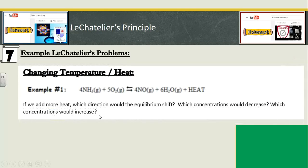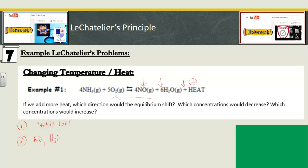For temperature and heat: if we add more heat, we shift away from what we add, so the equilibrium shifts left. Everything on the right side — NO, H2O, and heat — decreases. Whatever you're shifting towards increases, so NH3 and O2 would increase in their concentrations.